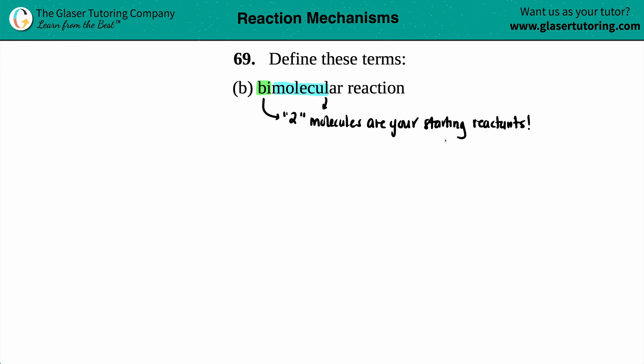But there's one other catch here. For your bimolecular reaction, if you're calling it bimolecular, that means the reaction has to be classified as an elementary reaction. An elementary reaction is a single step reaction. What you see is what you get. So in essence, a bimolecular reaction is an elementary reaction that has two molecules as the starting reactants.